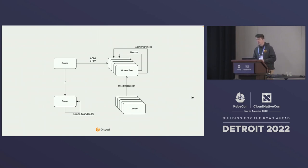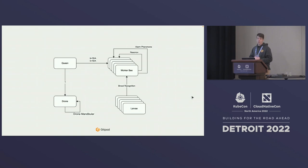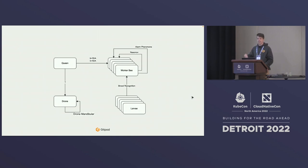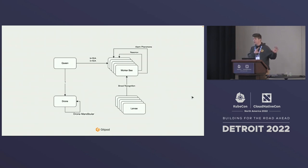There are other PubSub mechanisms, specifically pheromones, which are widely used between different participants in the system. For example, the queen emits two pheromones — 9-ODA and 5-HDA — which you can think of as a health endpoint. It's essentially a liveness check of the queen, telling the rest of the hive that there is still a queen here and they don't need to produce a new one.